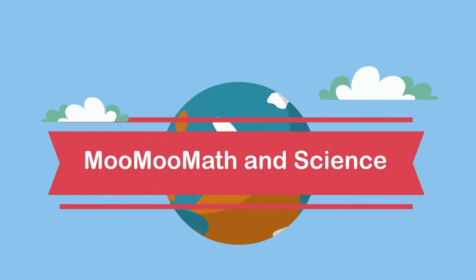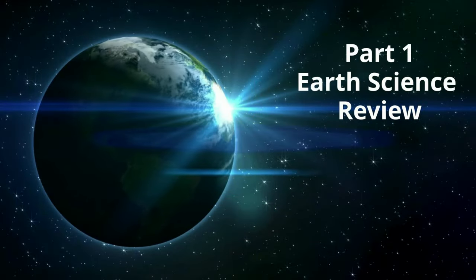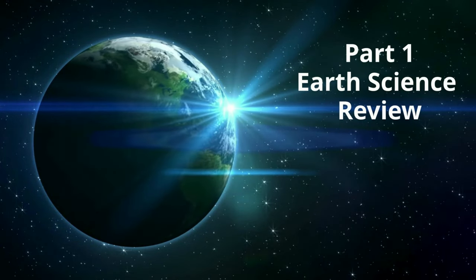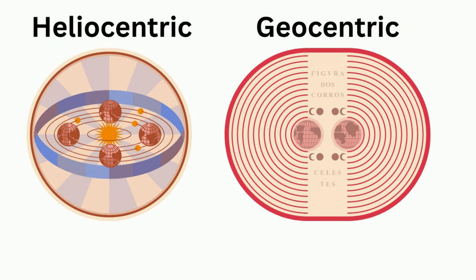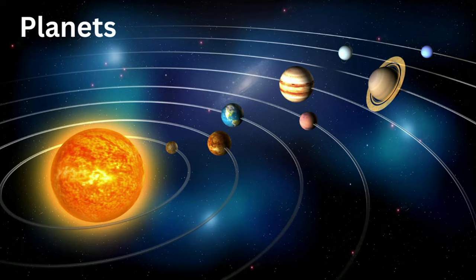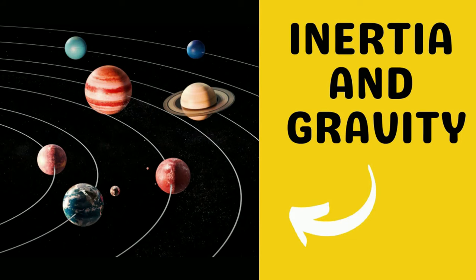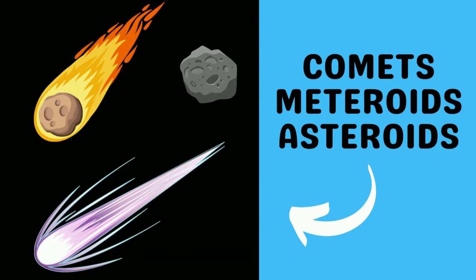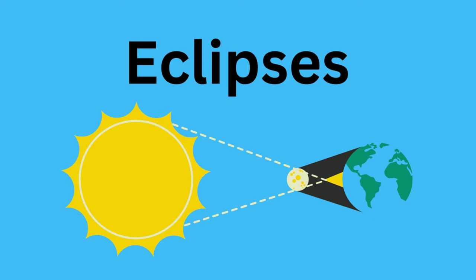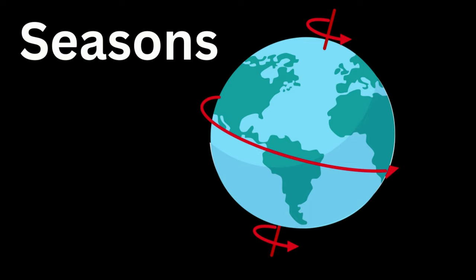Welcome to MooMooMath and Science. This will be part one of a year-long review of Earth Science. In this video I will cover the geocentric and heliocentric view of the universe, the Earth's position in the solar system and the Milky Way Galaxy, some planet facts, gravity and inertia working together, comets, asteroids, and meteoroids, phases of the moon, types of eclipses like solar and lunar, and how the tilt of the Earth impacts seasons.